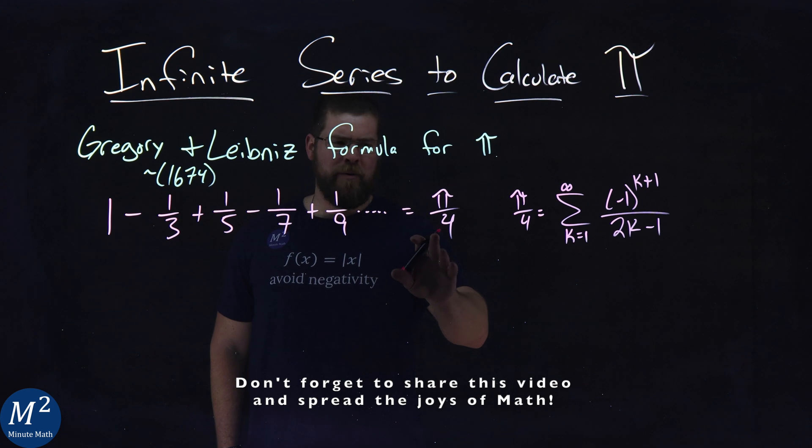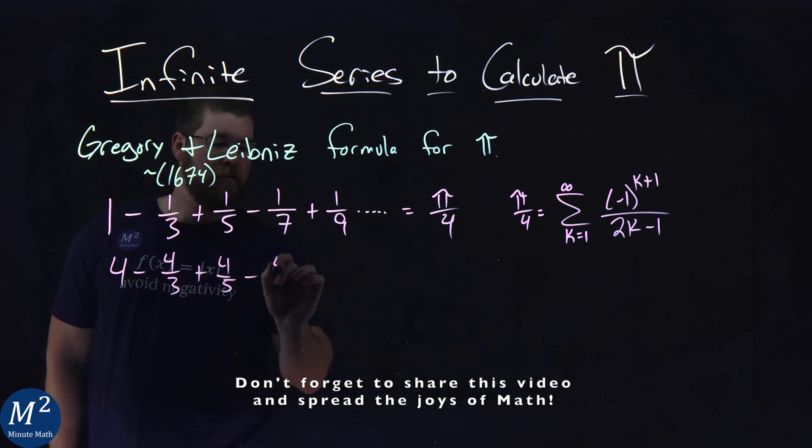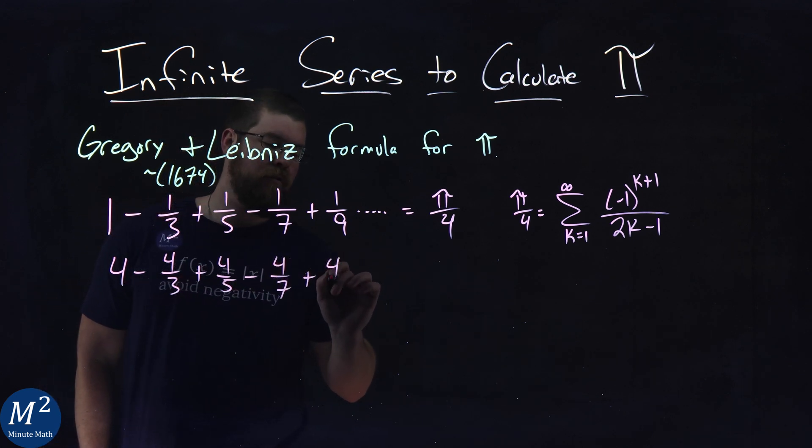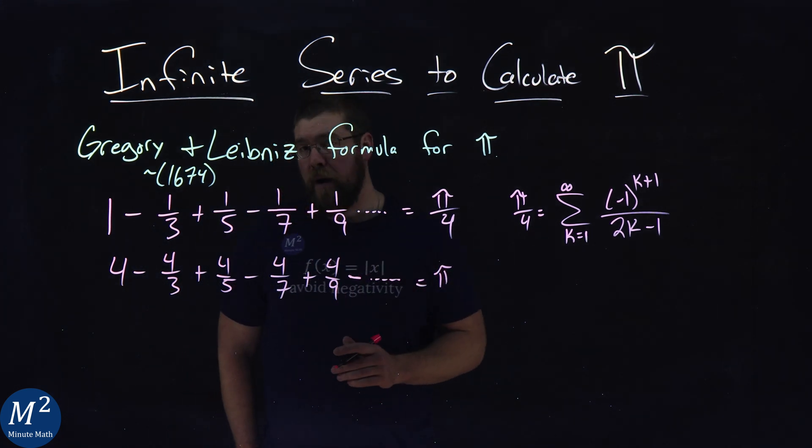Now, I always adapted this formula, multiplied both sides by 4, and I would write it like this: 4 minus 4/3 plus 4/5 minus 4/7 plus 4/9, you get the gist. And that's going to equal your pi.